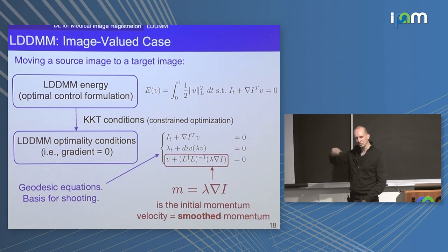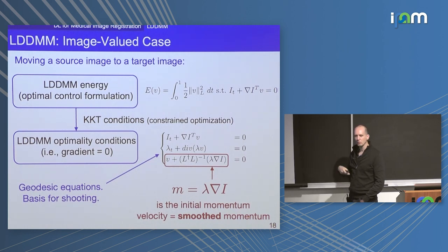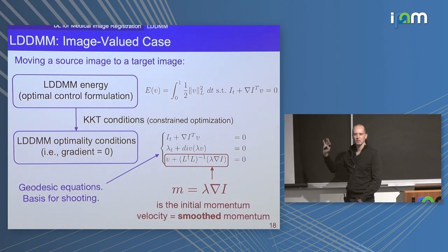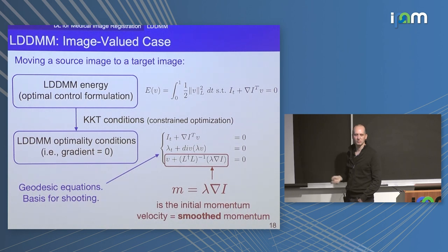If you start from this formulation and compute the first variation to find the optimality conditions, you end up with a triplet of equations. The forward model flows the image according to the velocity field. The adjoint equation is a scalar conservation law — essentially a continuous version of error backpropagation, where lambda is the error backpropagated over time. And then there is an equation coupling the velocity field, the scalar momentum (the Lagrangian multiplier), and the gradient of the image.